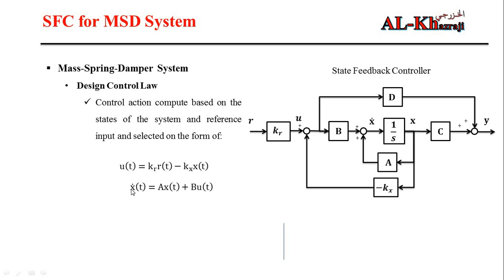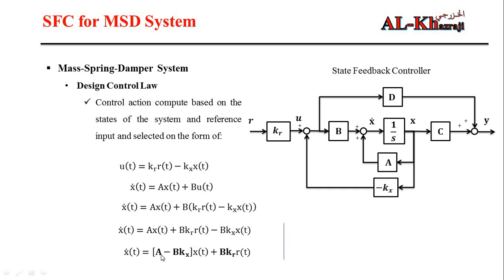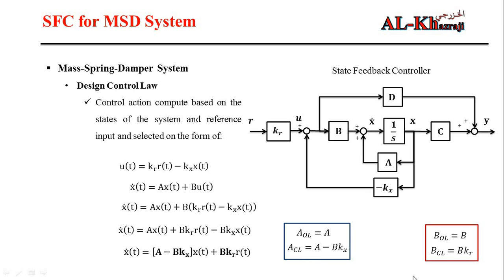Substituting this control law into the state equation and rearranging, we obtain a new closed-loop A matrix: A_cl = A − B·KX, and a new closed-loop B: B_cl = B·KR. The open loop A cannot be changed by the designer, but by manipulating KX we can move the closed-loop poles to improve the transient response. KR is used to remove any steady state offset so the system tracks the reference.